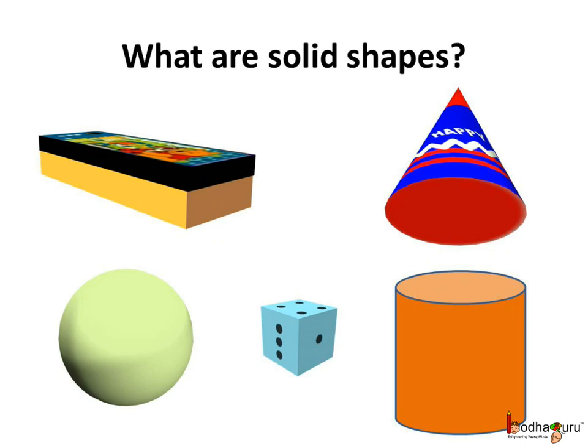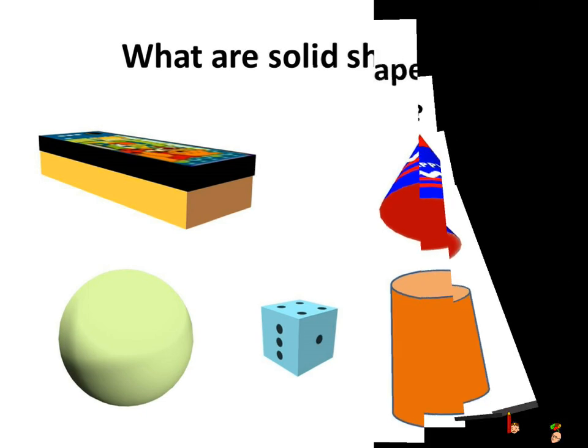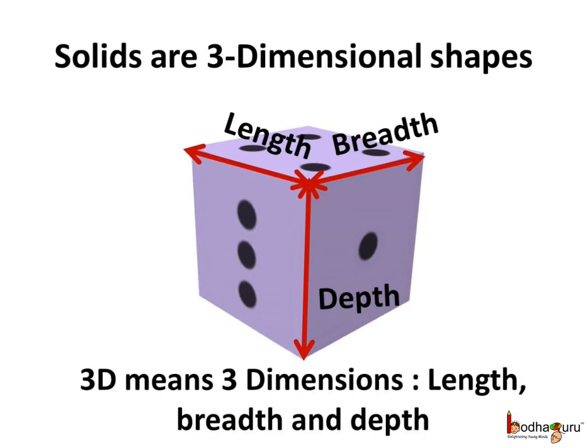This pencil box, ball, the birthday cap, dice and the dustbin are all solid shapes. All the solid objects which we can hold have one more dimension which is the depth.